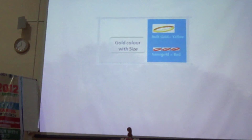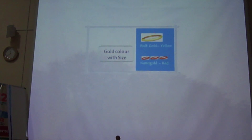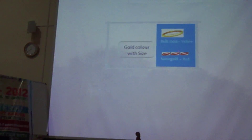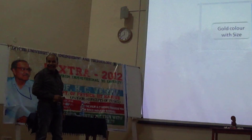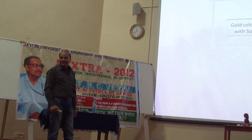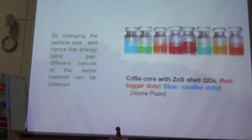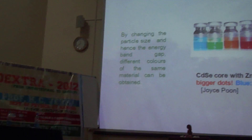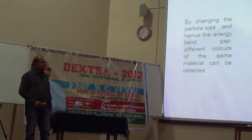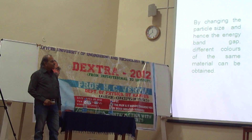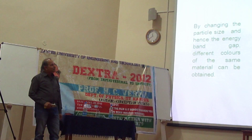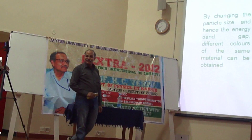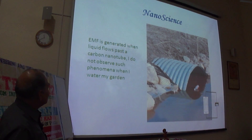Optical properties, color. This is gold — but this is also gold. It is only a matter of size. This is cadmium-selenium core and zinc sulfide shell — the same material. Only the sizes are different and you can see the colors are completely different from each other.